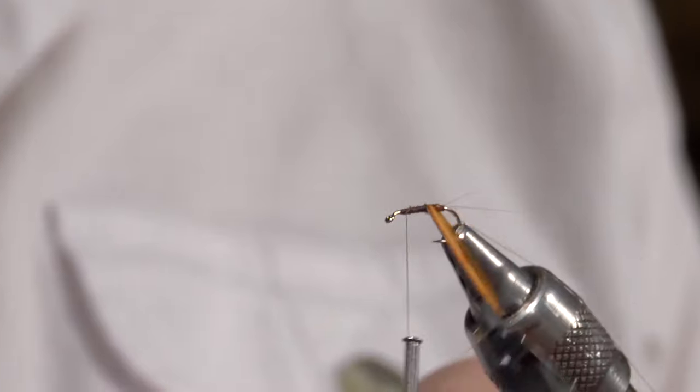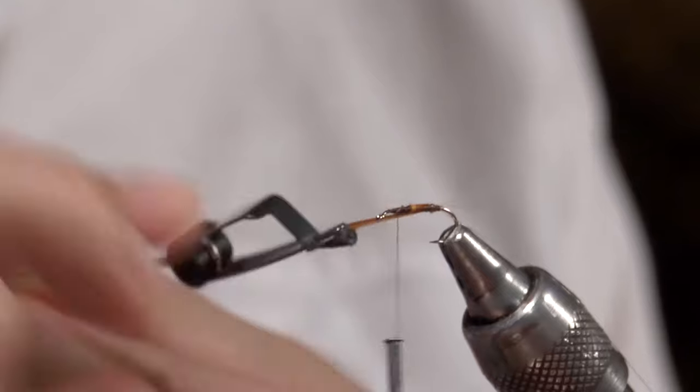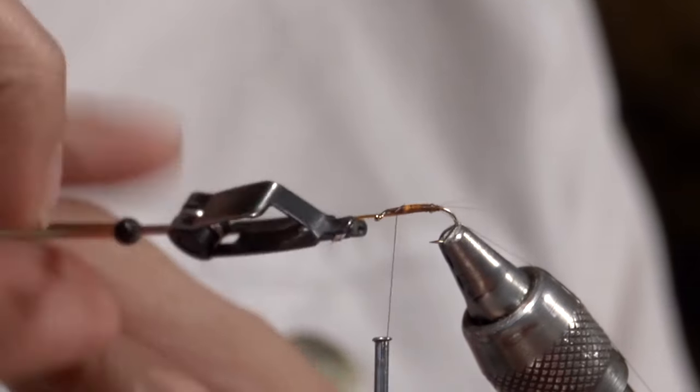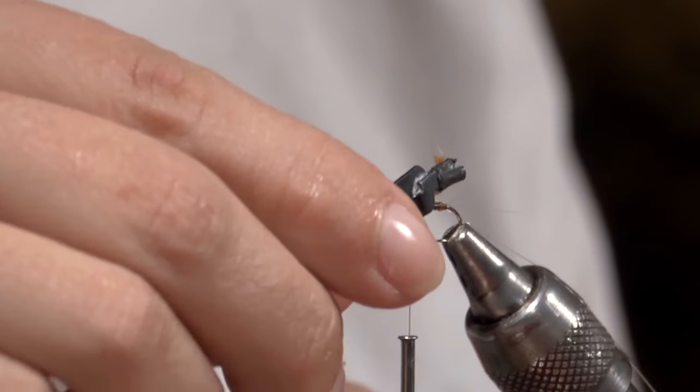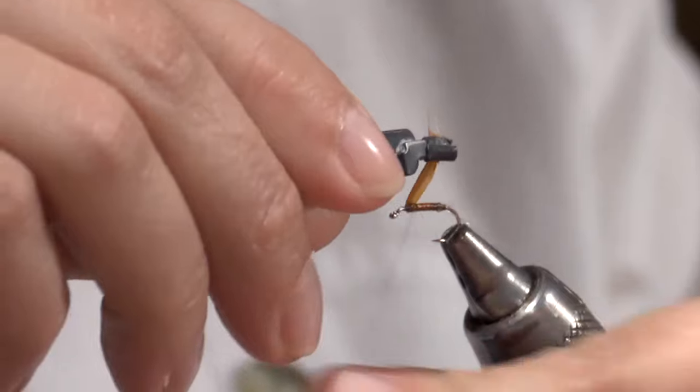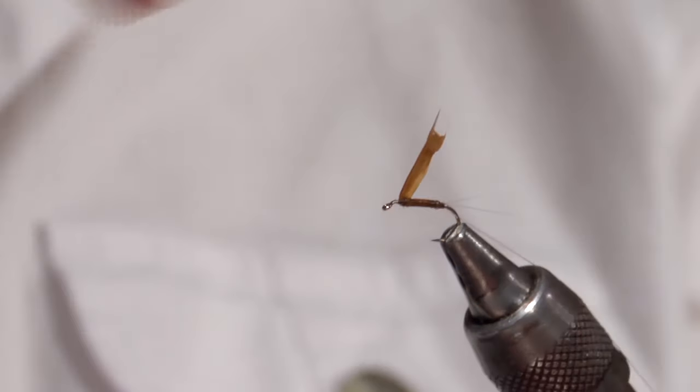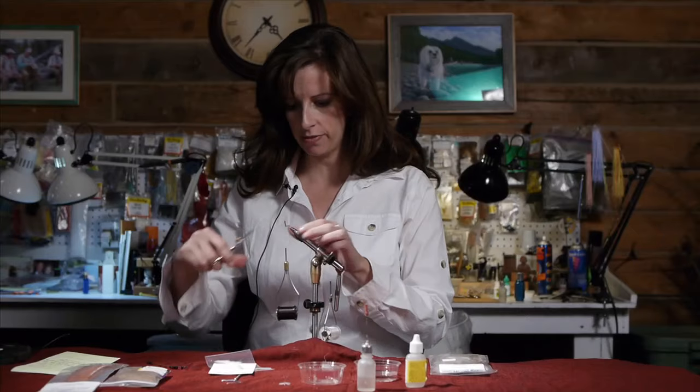And I make sure to cover up that thick seam there with my biot to give it that smooth body. And I run it up to where I left off with my thread. And I tie it off. Keep my wraps pretty firm. Trim off the excess here.